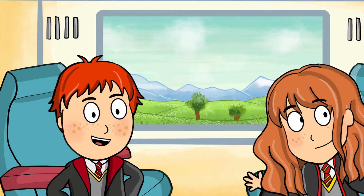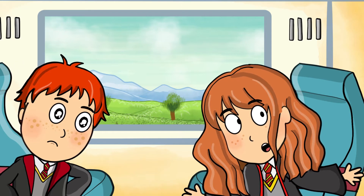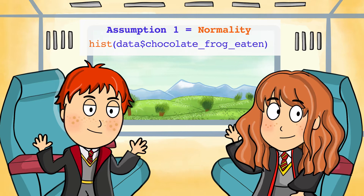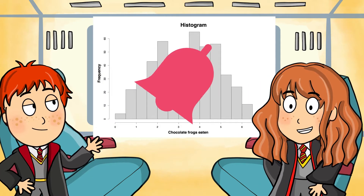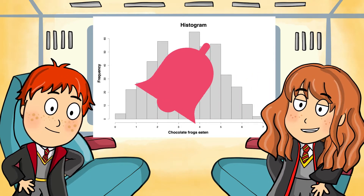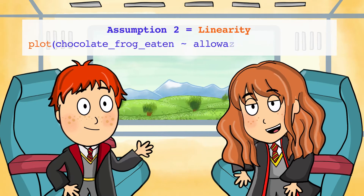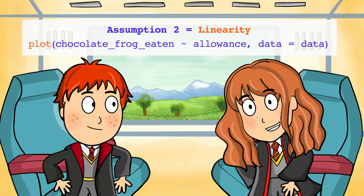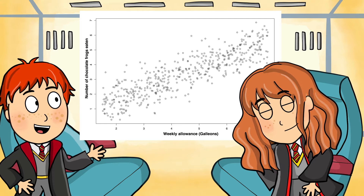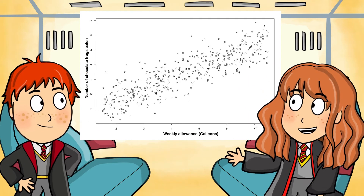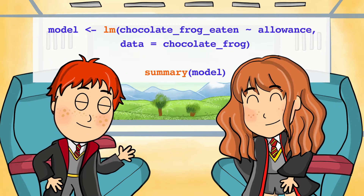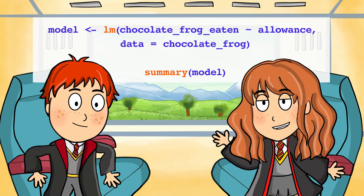What are the assumptions, Hermione? The first is whether the dependent variable follows a normal distribution. We can plot the amount of chocolate frogs eaten using the hist function. It looks like a bell shape. Yes, this means that the observations roughly follow a normal distribution. Then, we need to check for linearity to see whether the relationship between chocolate frogs eaten and allowance is linear. We do this by using the plot function. The points on the graph look like they're following a straight line. Yes, this means that the relationship is more or less linear. We can then use the lm function to fit a linear model, and the summary function to explore the results.